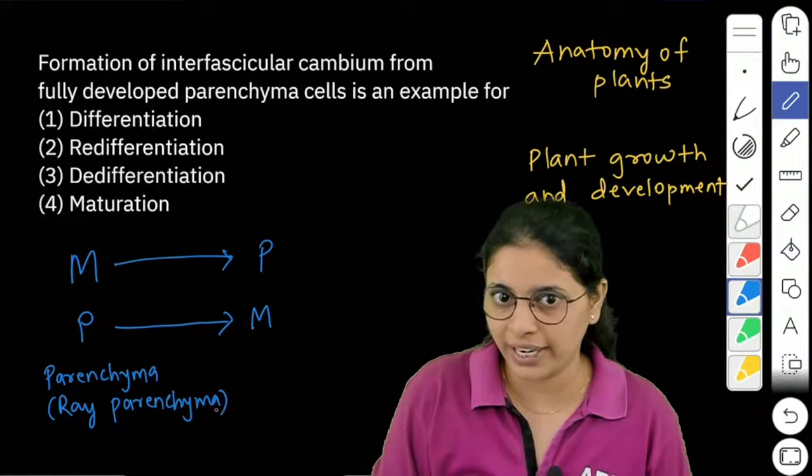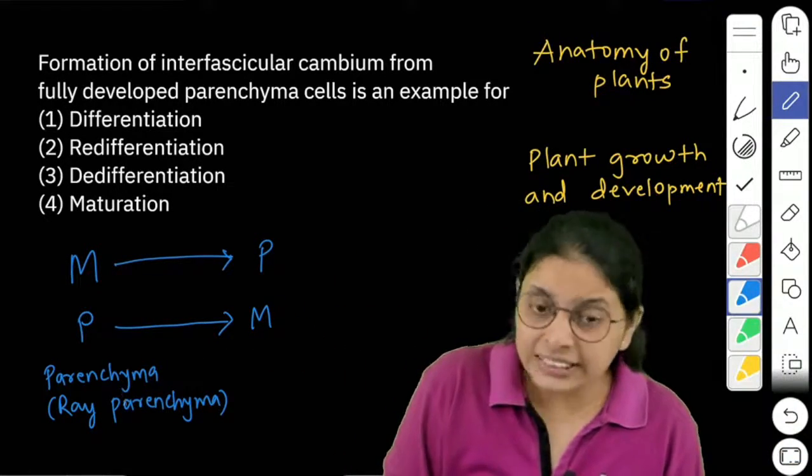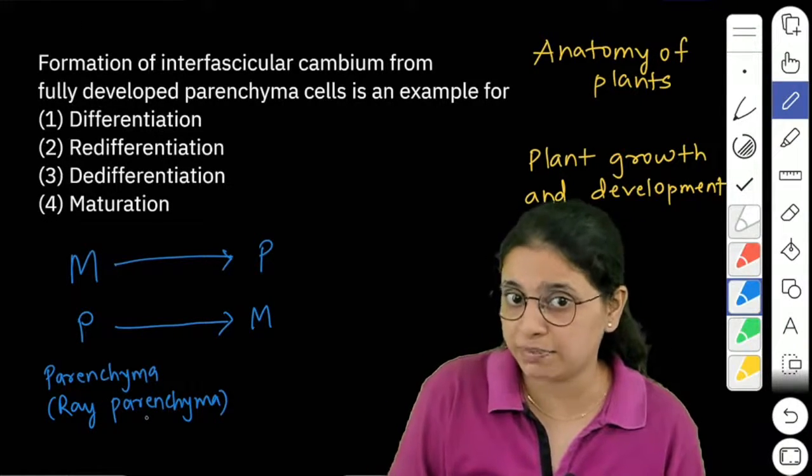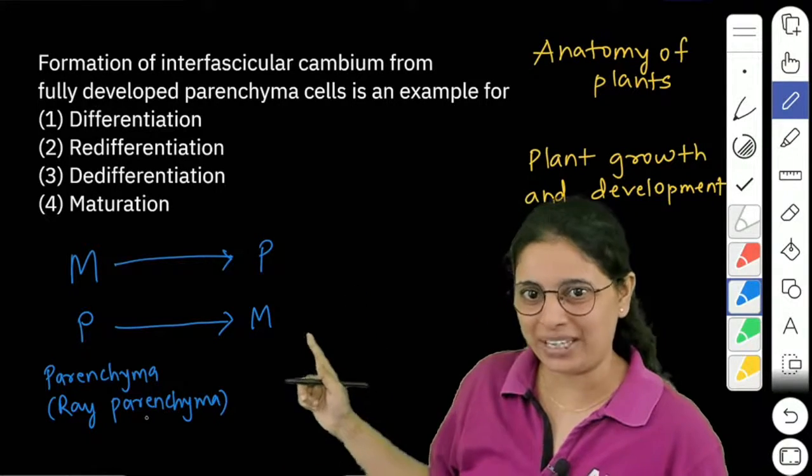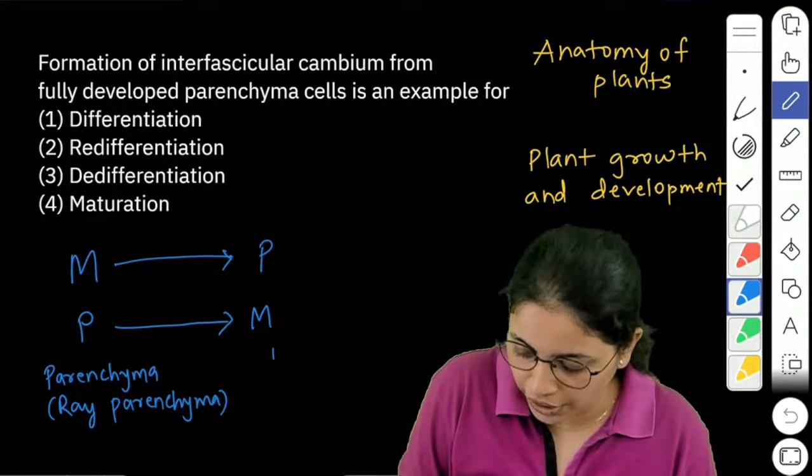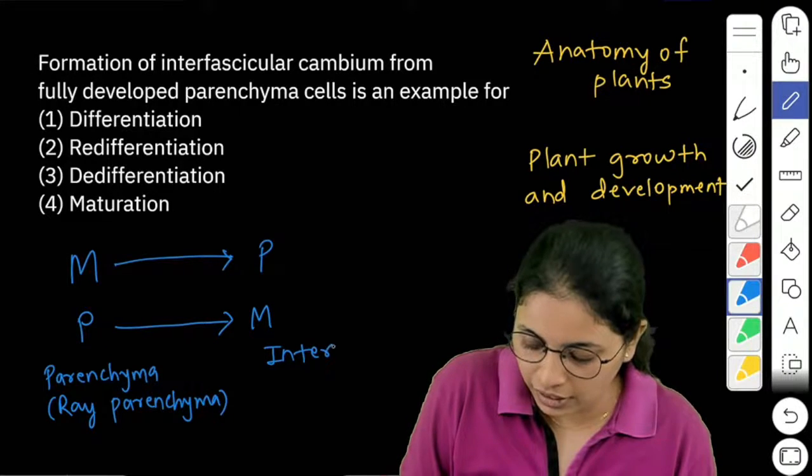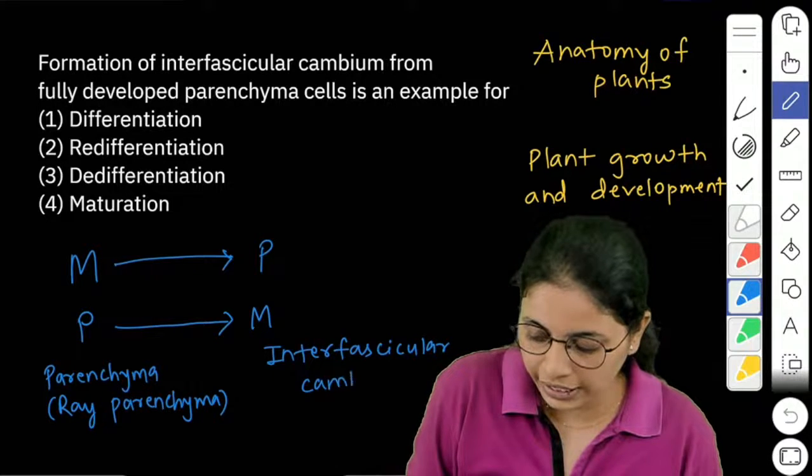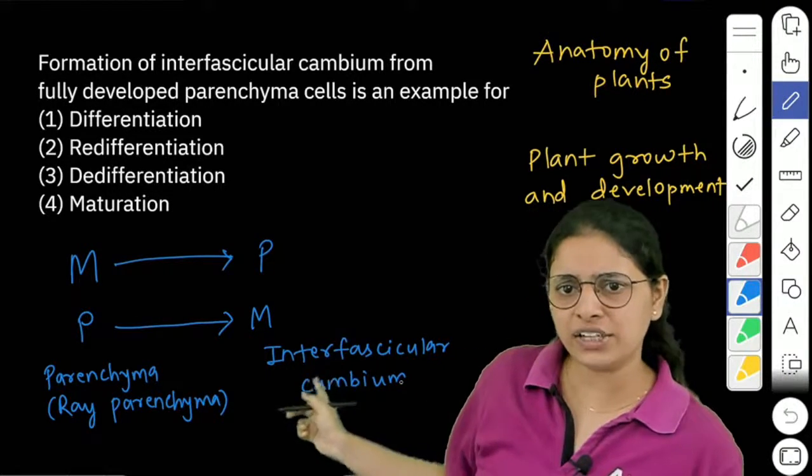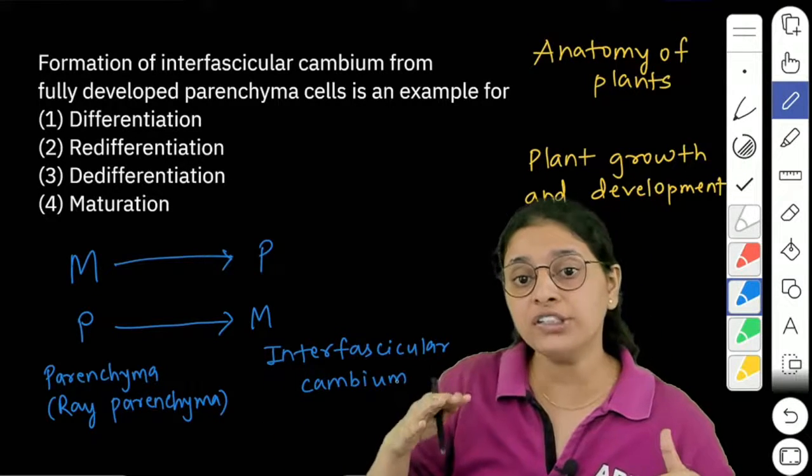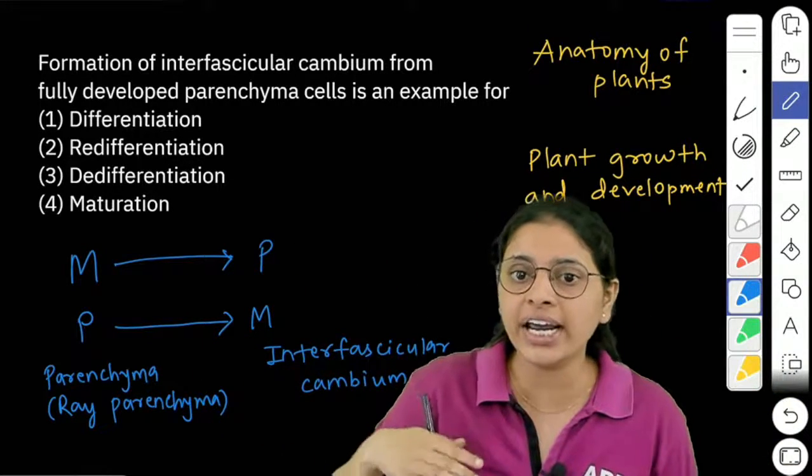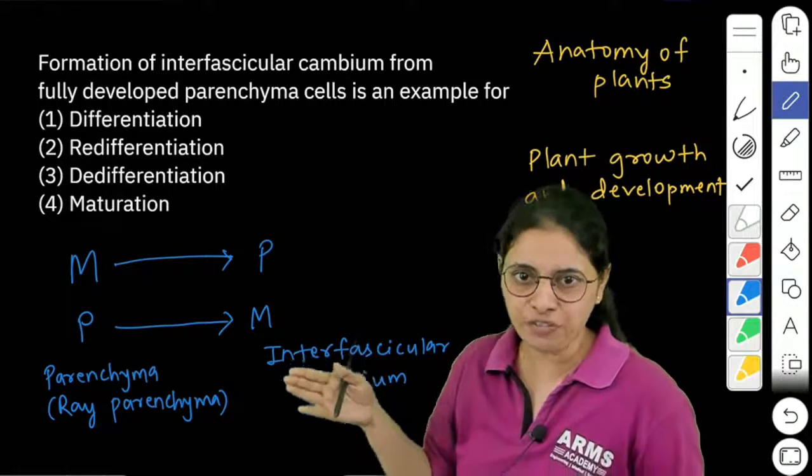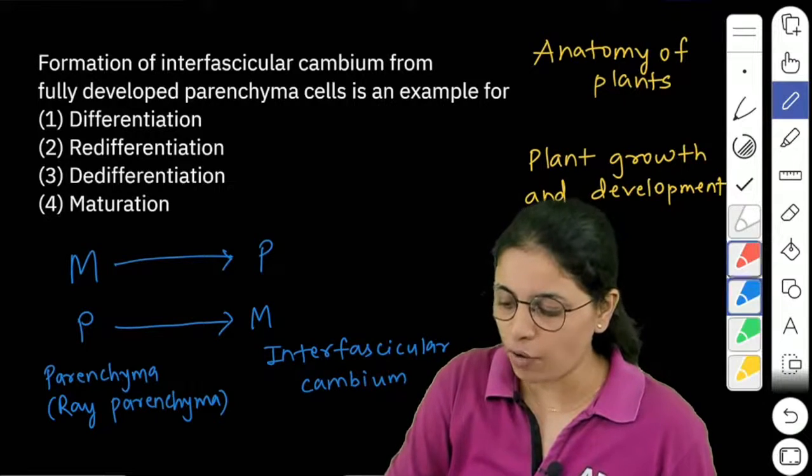So during secondary growth, these ray parenchyma cells or the medullary rays which are already permanent cells specialized, they become meristematic and they actually give rise to this interfascicular cambium. Later on this interfascicular cambium differentiates again. So there is re-differentiation and it gives rise to the secondary xylem and secondary phloem. So if we see all the processes...